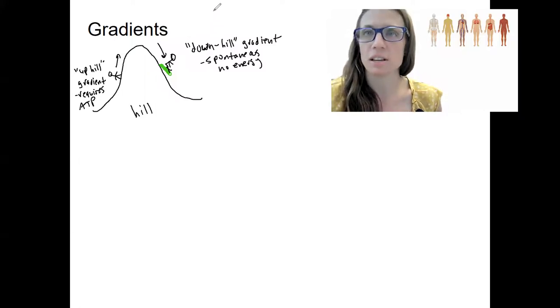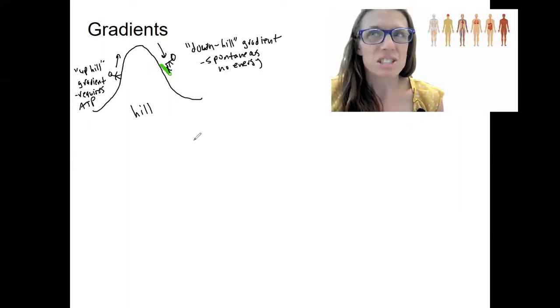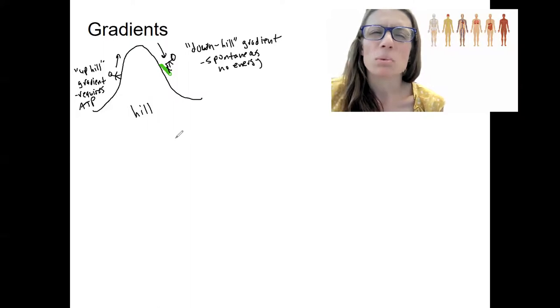So what types of gradients are we going to see in our body? There's a couple. The last two are going to be the biggest. I'm going to start with the one that's most intuitive. So a pressure gradient.